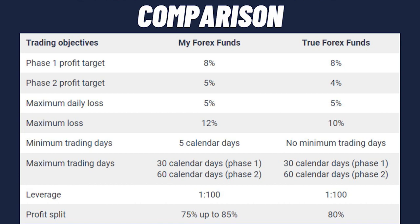Leverage is the same at 1:100 for both firms. My Forex Funds starts at a 75% profit split and can reach up to 85%, while True Forex Funds — like E8 Funding — has a fixed 80% profit split. Additionally, My Forex Funds rewards traders with a refundable fee of 112%, plus 2% of Phase 1 profits and 4% of Phase 2 profits as additional bonuses — a feature I really appreciate.